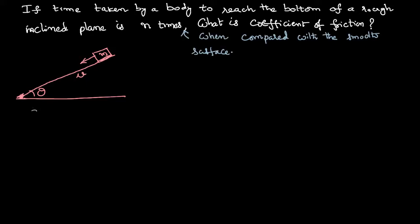We know that when the body is coming down on a rough inclined plane, acceleration can be derived as it is proved in the previous videos: a equal to g of sin theta plus mu of cos theta. It is also proved that time taken to reach the bottom of the rough inclined plane is root of 2L by g of sin theta minus mu cos theta, where L is the length of the inclined plane.